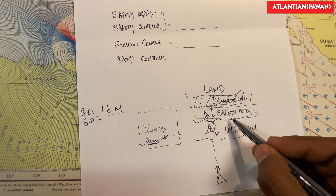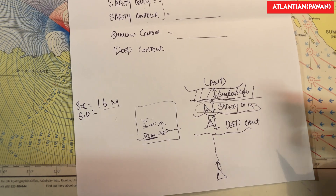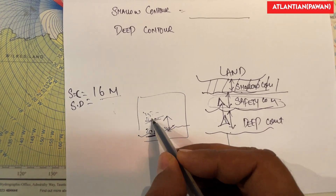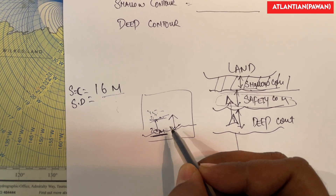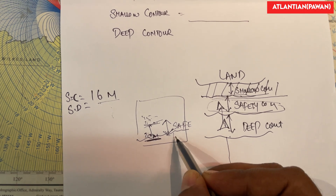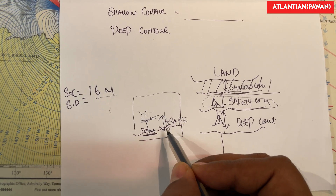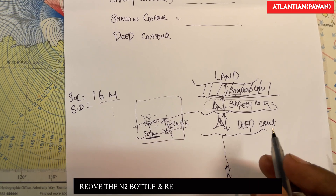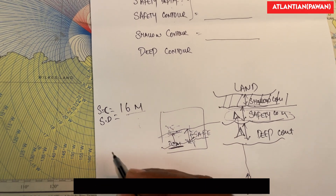This does not mean I cannot navigate within this area. As I've shown, we can safely navigate beyond the safety contour — we shall not go toward the shallow contour because there are chances of running aground. But between 16 and 20 meters there is no contour on this chart, so this is my safety contour. It does not mean that after entering safety contour I cannot go further — I can still navigate within this area wherever I have safe depths.